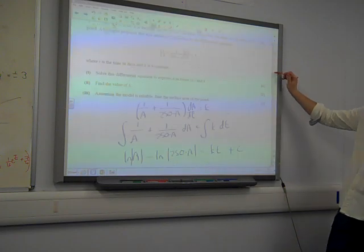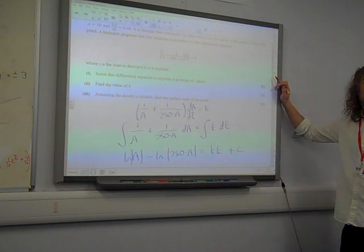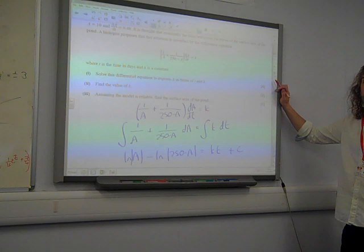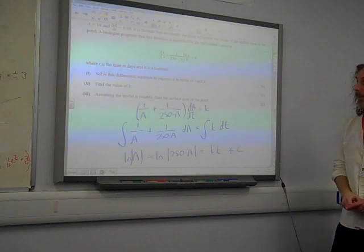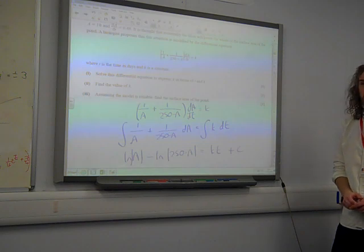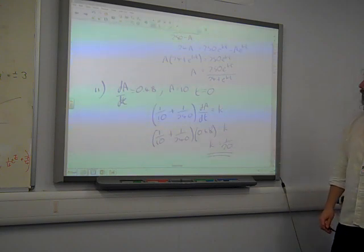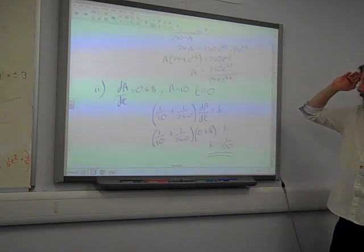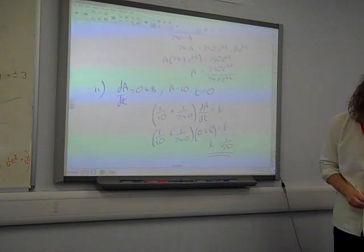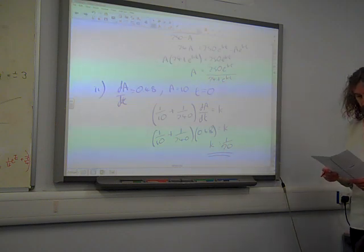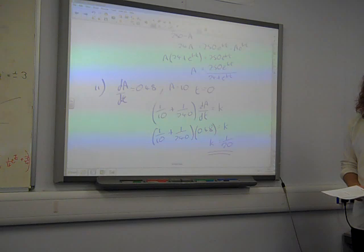There we are. And the last part says, assuming the model is reliable, find the surface area of the pond. Well, again, there's not an awful lot going on with this, is there? The surface area of the pond, if you look at this, there's an issue, isn't there? As a approaches 250, we would have a problem there, because we'd start dividing by 0 as we get close to 250. If we think about our equation that we've got here, as t gets very very large, then we'd end up with that approaching 250. It's kind of 250, it's all jumping out of us, isn't it? As t approaches very large number, that approaches 250.